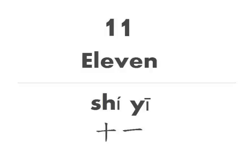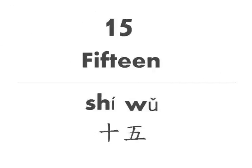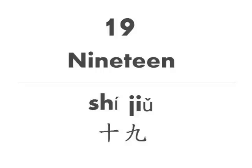To say 11 in Chinese, all you do is say 10, 1: shi yi. Again, 11 is just 10, 1. Repeat: shi yi. 15 is simply 10, 5: shi wu. 19 is 10, 9: shi jiu.